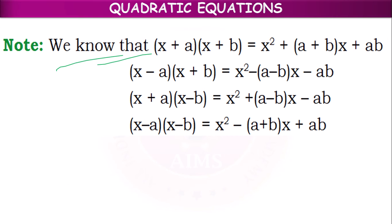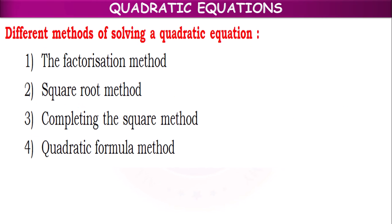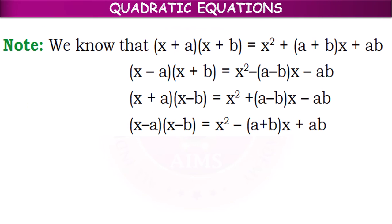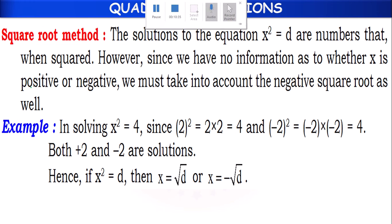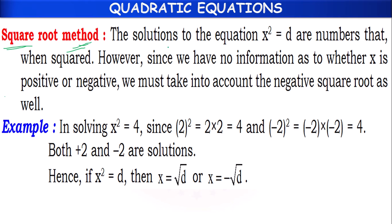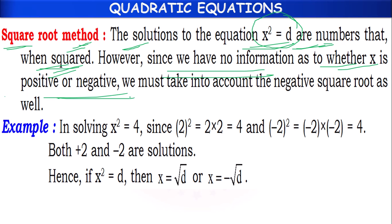So the first method — factorization method — is completed. Next, we have the square root method. The solutions to the equation x² = d are numbers that when squared give d. But we have no information whether x is positive or negative. So we must take into account both positive and negative square roots.